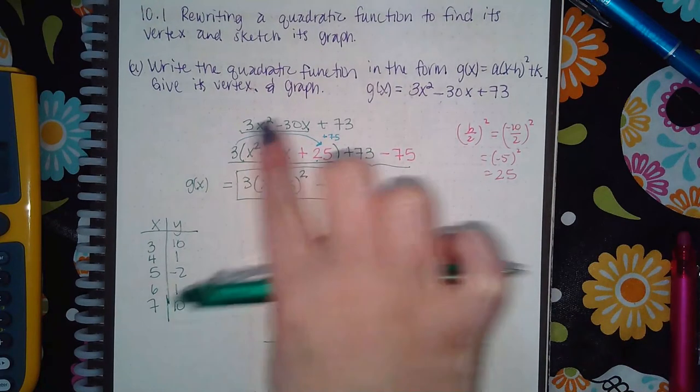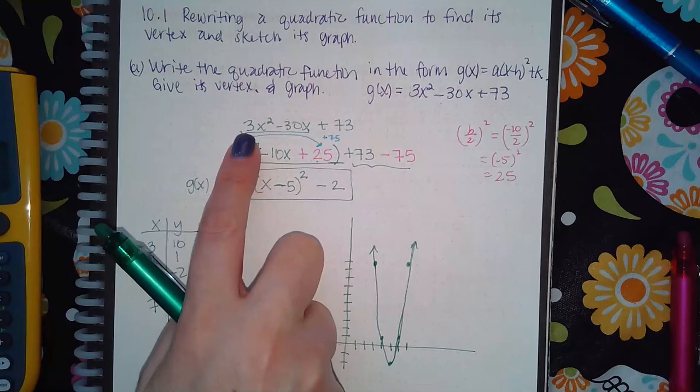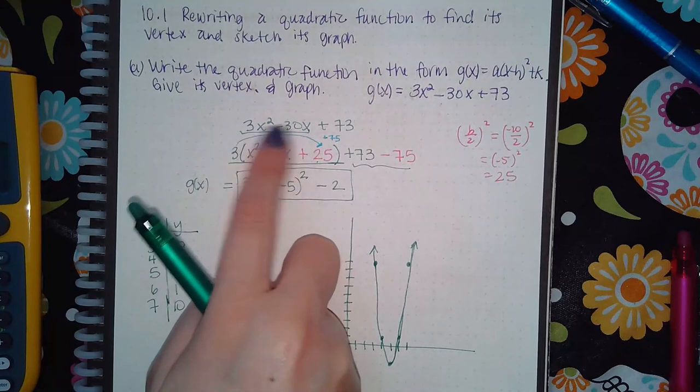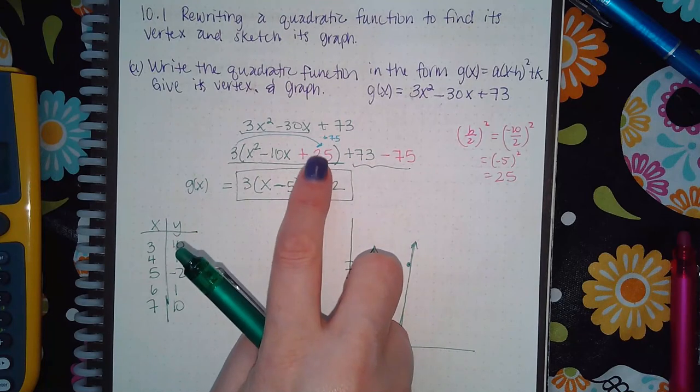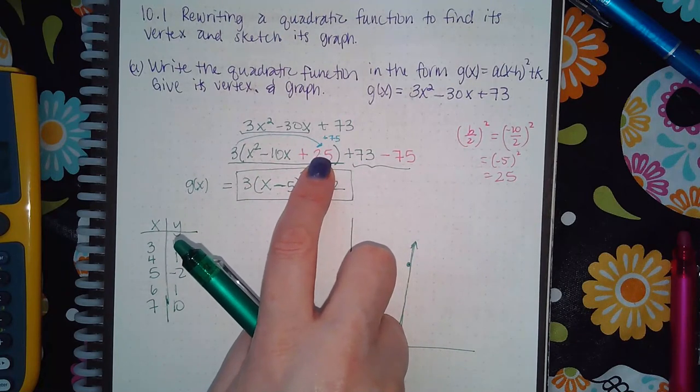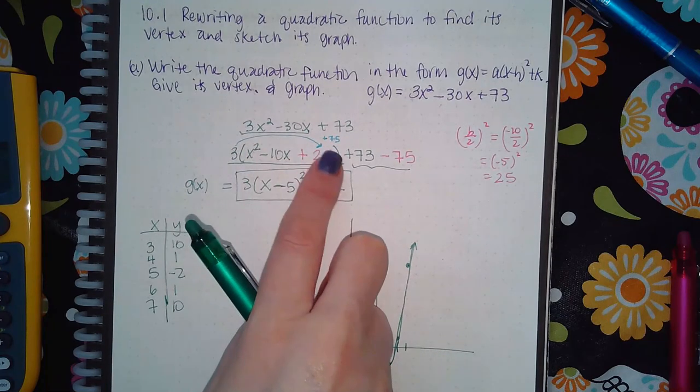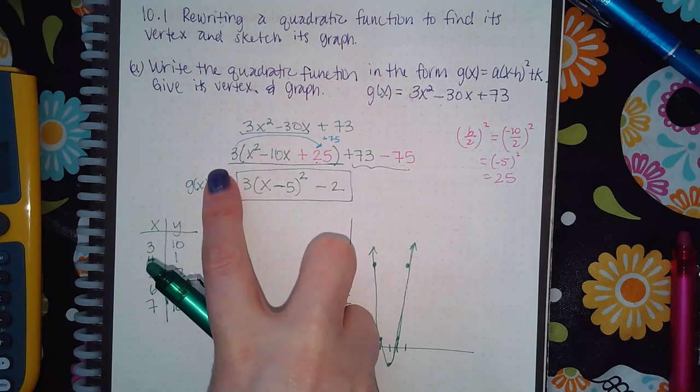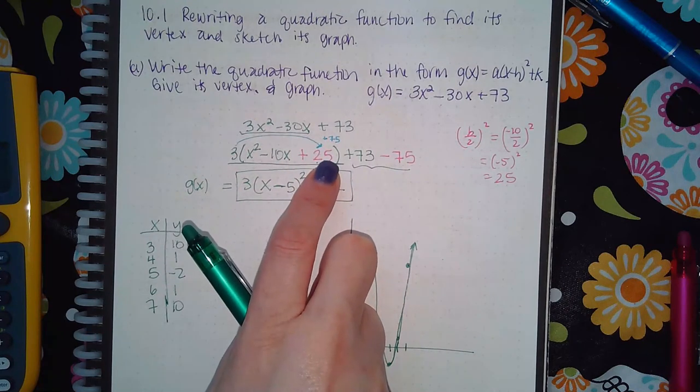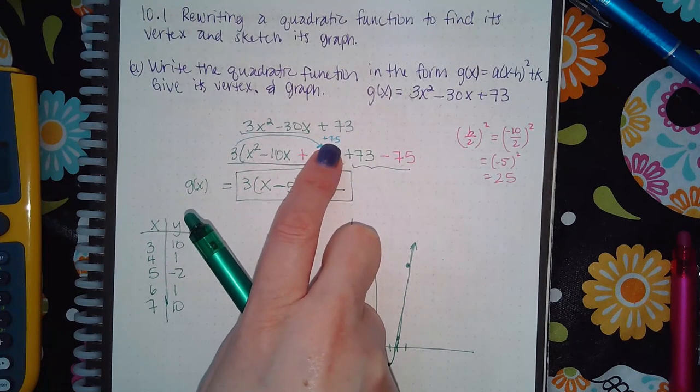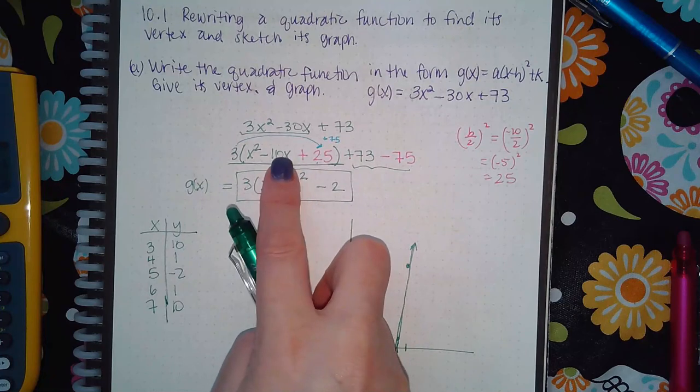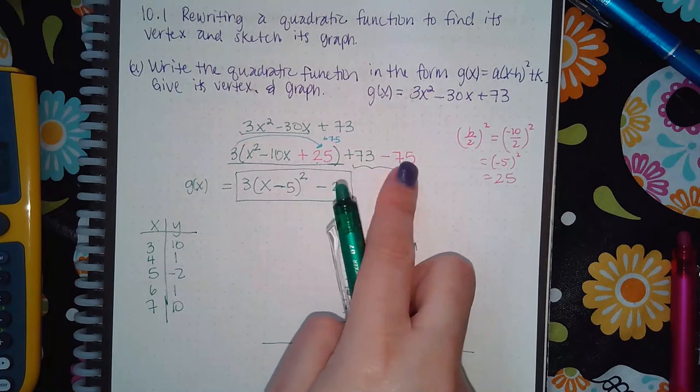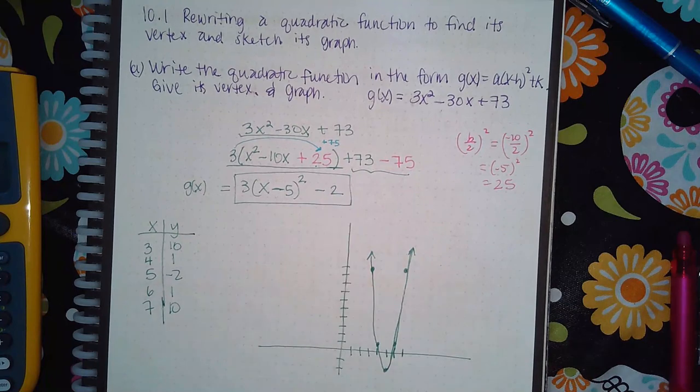The hardest part is going to be the completing the square, making sure you factor the a out from both of the first two x terms, keep the other constant off to the side. Once you figure out what you're adding inside the parentheses, be sure to think about what it means you're really adding. So take that a and multiply it by what you've added to figure out what you've really done. Once you know what you've really done, then do the opposite out here. Then it's a matter of just factoring this and combining these like terms, and then you'll have it in the form that you need to have it in.